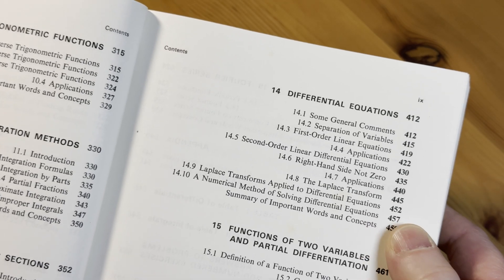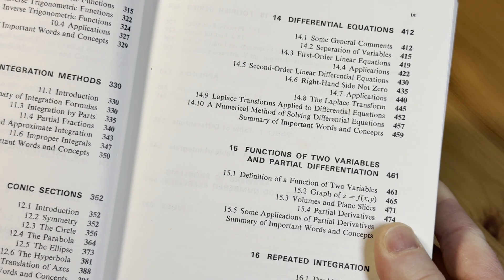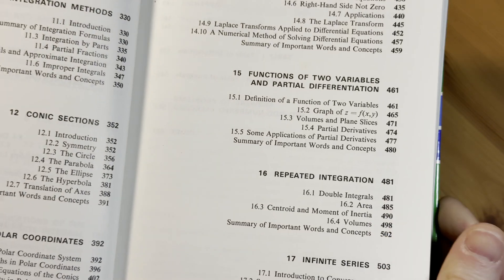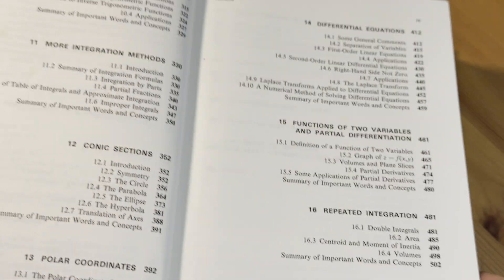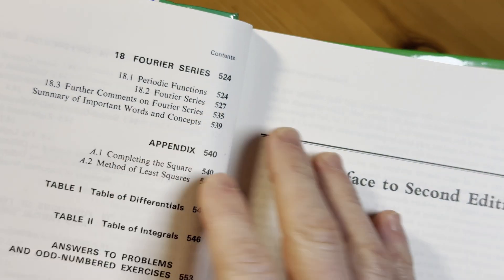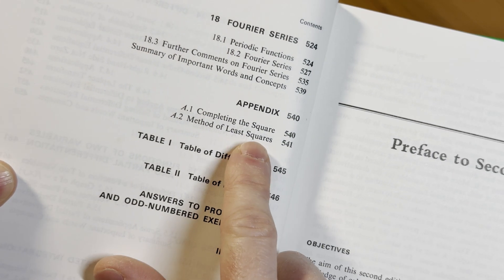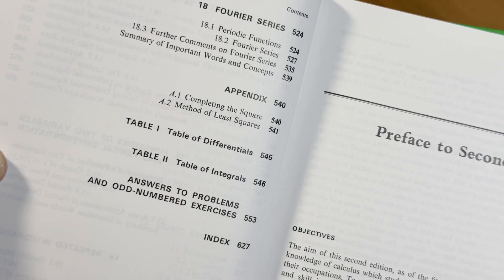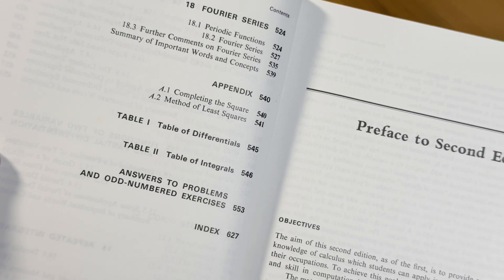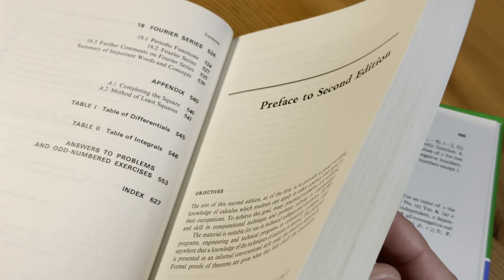You've got some differential equations in here, which is pretty cool. Functions of two variables and partial differentiation. Repeated integration. And infinite series. And then Fourier series. So that's not something you see in every calculus book out there. And there's an appendix. Completing the square and the method of least squares are included in the appendices. You also have answers to problems and odd numbered exercises.